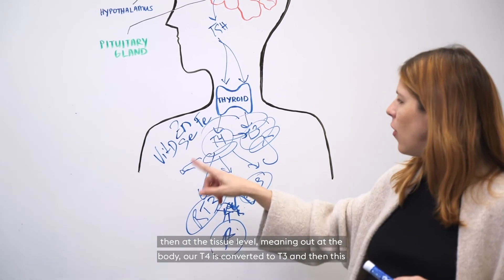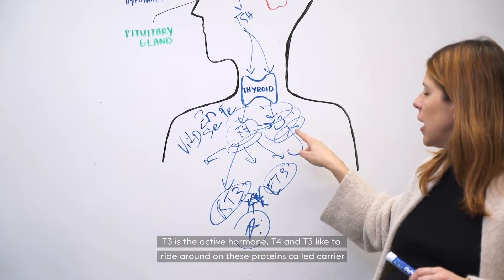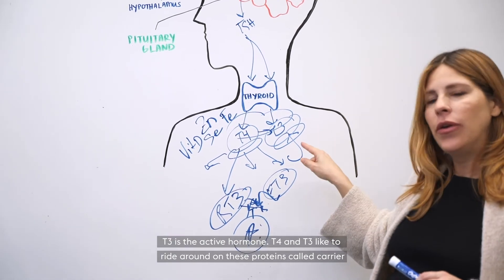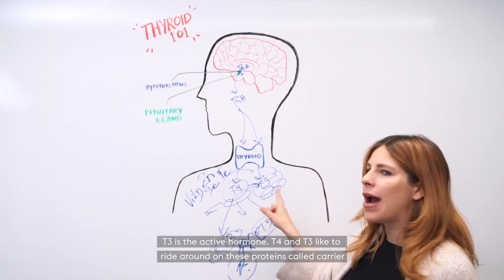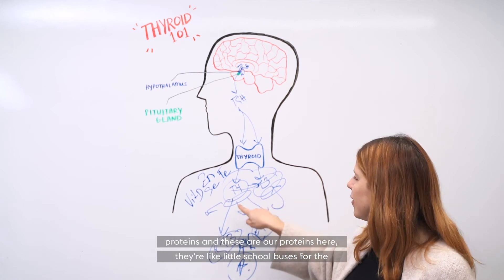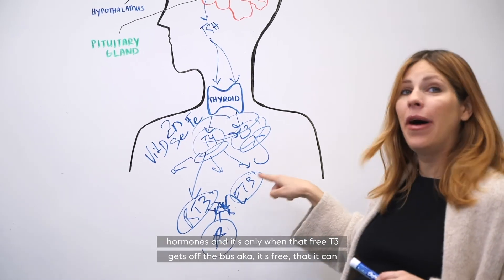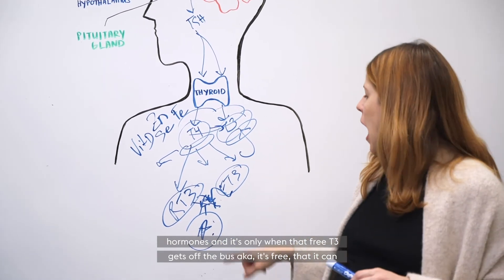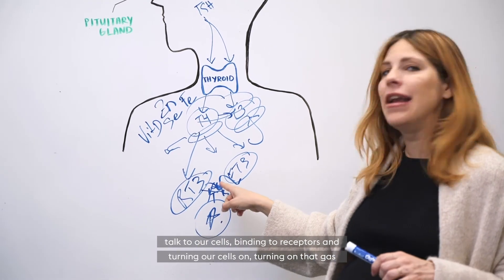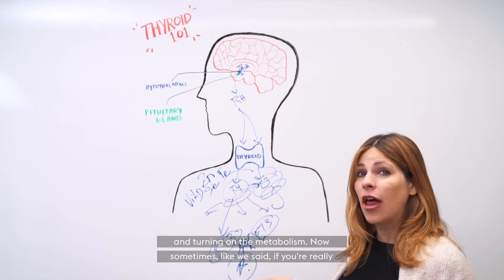And then at the tissue level, meaning out at the body, our T4 is converted to T3. And then this T3 is the active hormone. T4 and T3 like to ride around on these proteins called carrier proteins. They're like little school buses for the hormones. And it's only when that free T3 gets off the bus that it can talk to our cells, binding to receptors and turning our cells on, turning on that gas and turning on the metabolism.